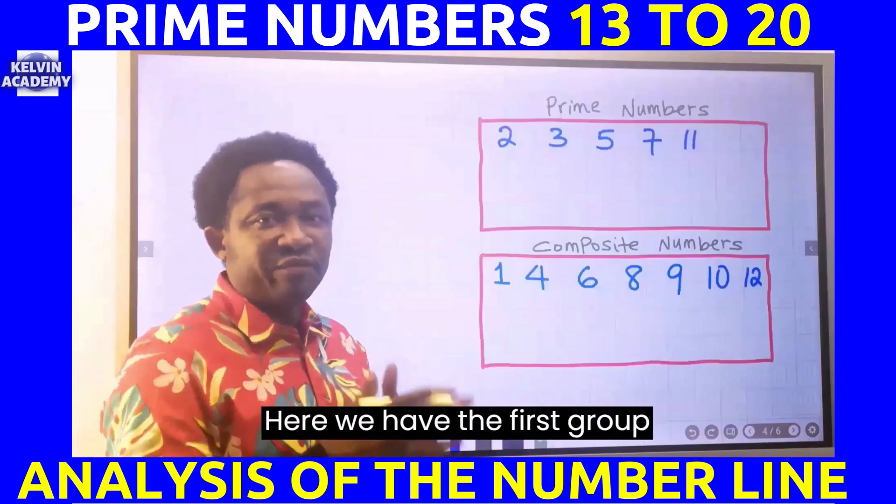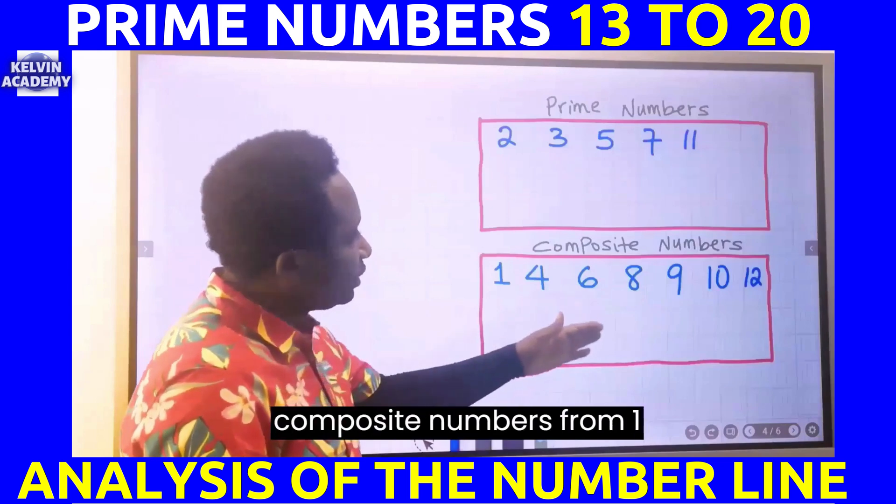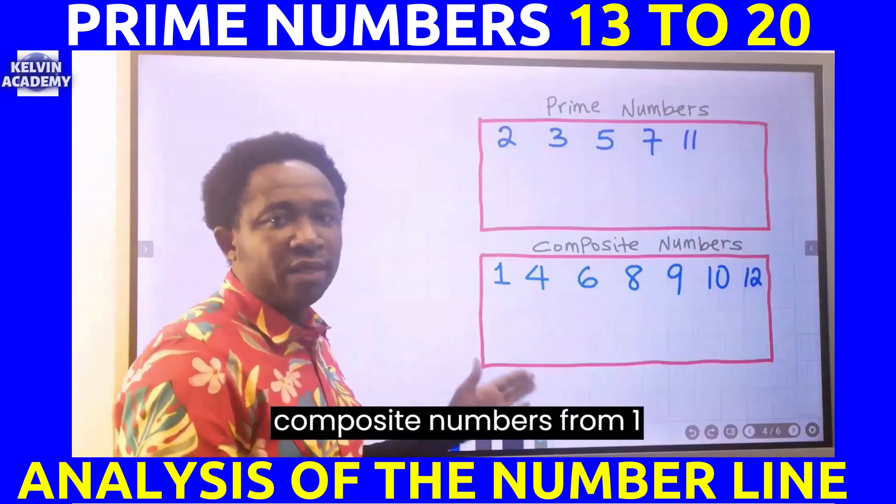Here we have the first group of prime numbers and composite numbers from 1 to 12.